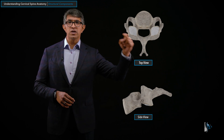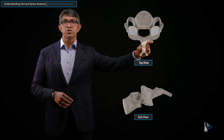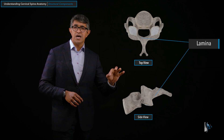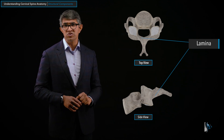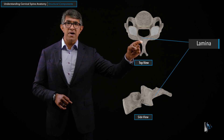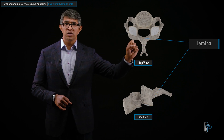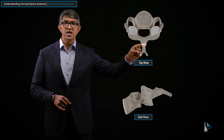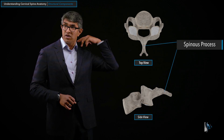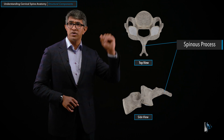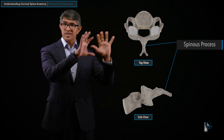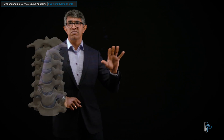To close out the spinal canal in the back, there are a couple of very important structures. There's something called the lamina — a term you'll hear when we talk about removing the lamina for a laminectomy. You've probably known somebody who has had a laminectomy. That's an important structure that forms the back part of the spinal canal, something we remove to open up the canal. And lastly, there's the spinous process — the structure you can feel when you touch the back of your neck. That little knob you're feeling, that's the spinous process.